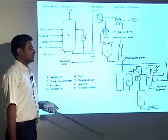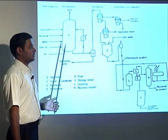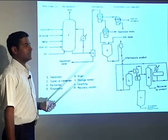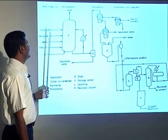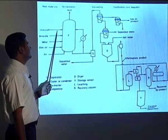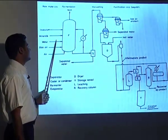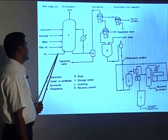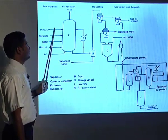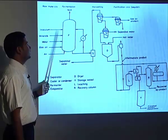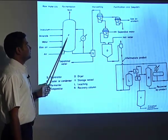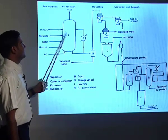This is the process flow diagram for the production of proteins by the petroleum route. The inputs added are inoculum, then minerals, water, gas, oil, and air. The inoculum is the yeast or microorganism which produces the proteins.